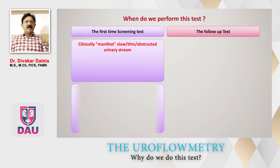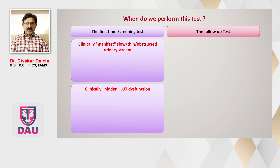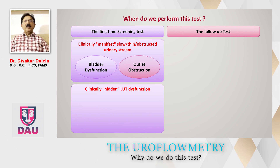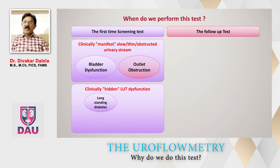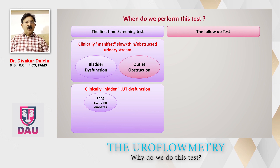We also do this test for what is called clinically hidden lower urinary tract dysfunction. In the clinically manifest group, two very common disorders are bladder dysfunction and outlet obstruction. In the clinically hidden category, patients with long-standing diabetes may not make upfront complaints of lower urinary tract symptoms. But if a lower urinary tract disorder is suspected — because of renal failure, UTI, or a palpable bladder — this hidden dysfunction can be investigated with uroflowmetry.